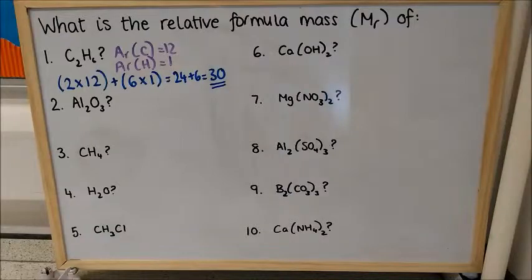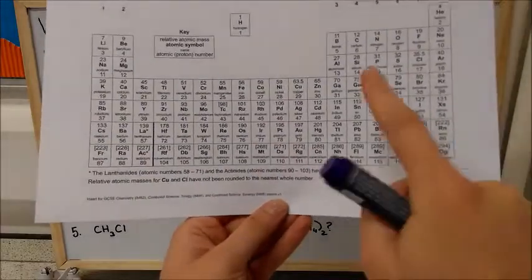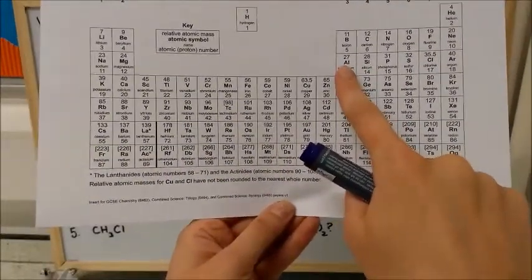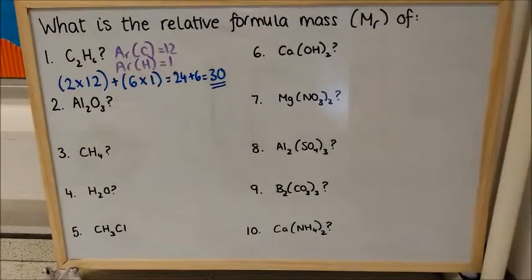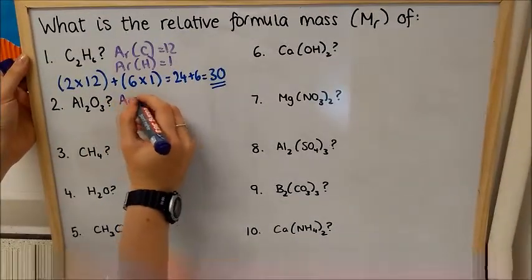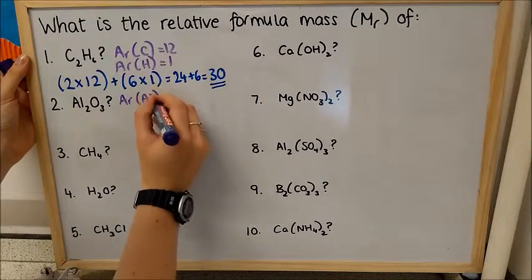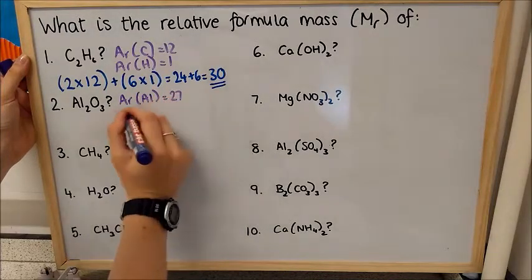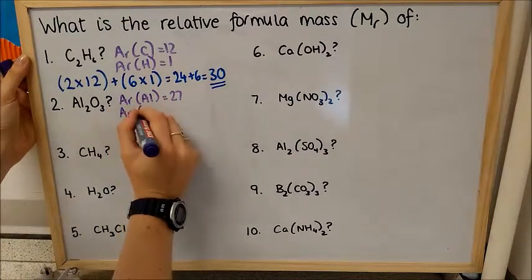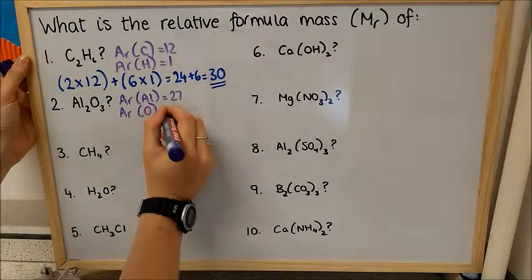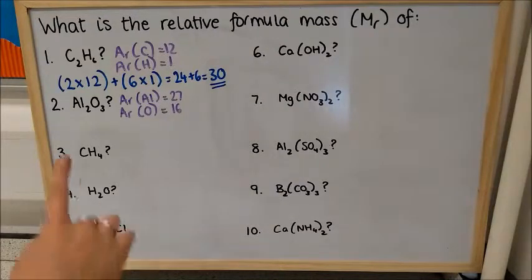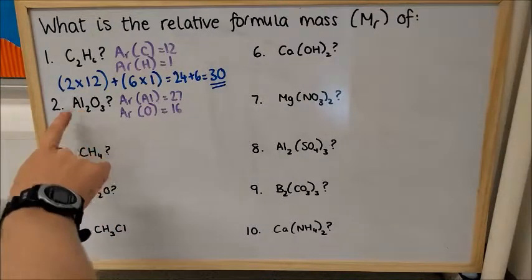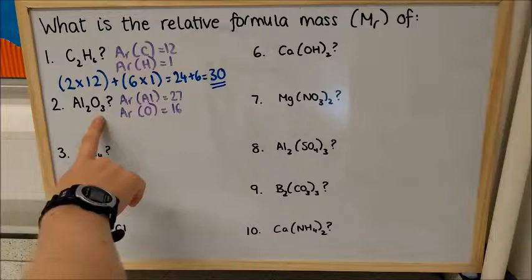So for the second question, I'm going to do exactly the same thing. I'm going to refer to my periodic table and find that the mass of aluminium is 27, and the mass of oxygen is 16. Again, I have to take into account the fact that there are 2 atoms of aluminium for every 3 atoms of oxygen in this formula.